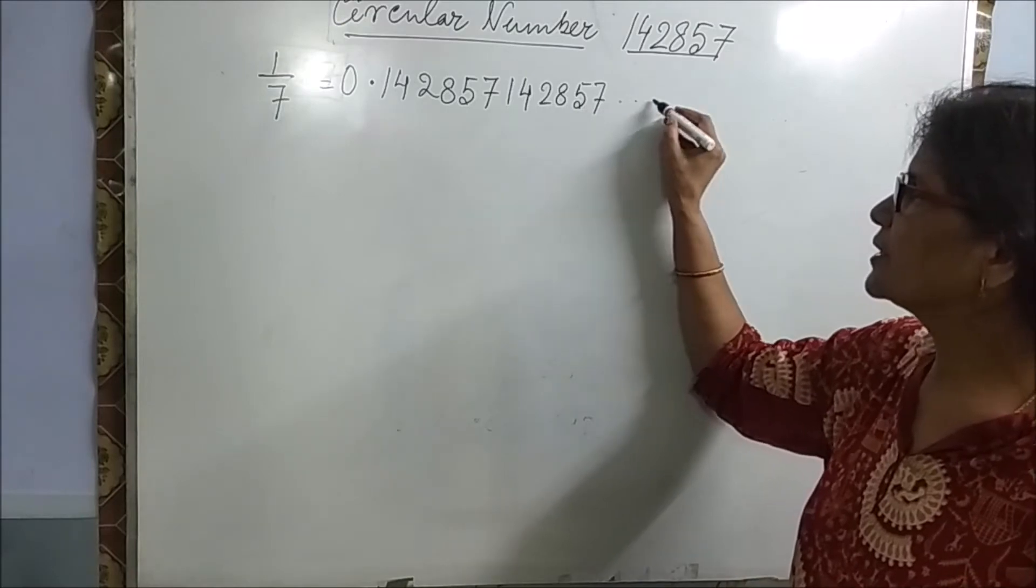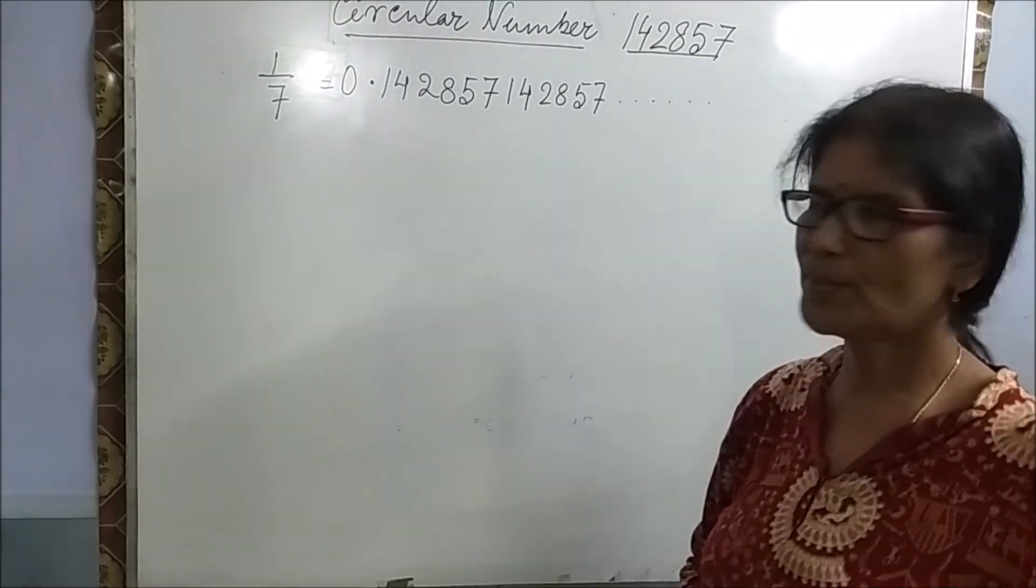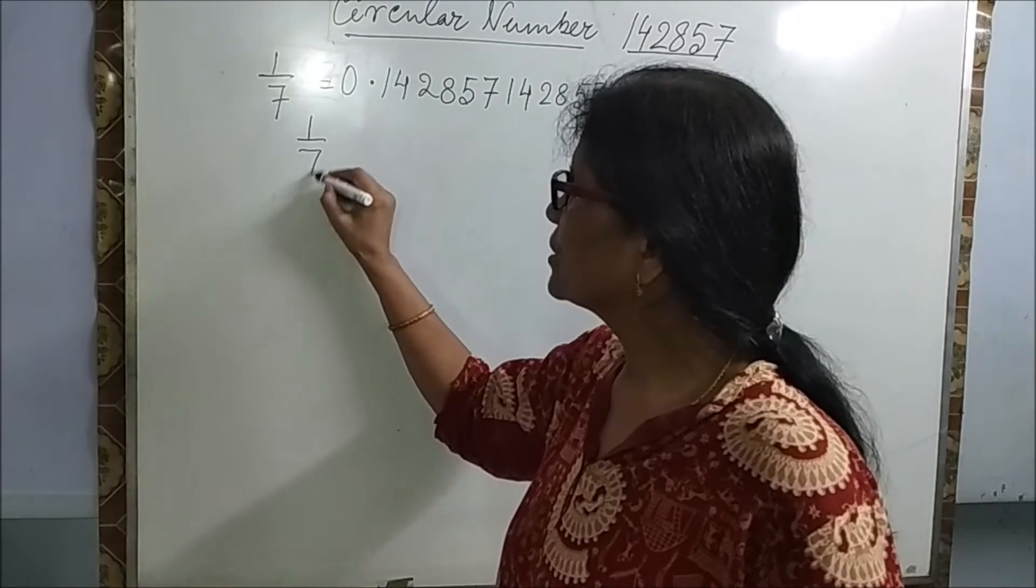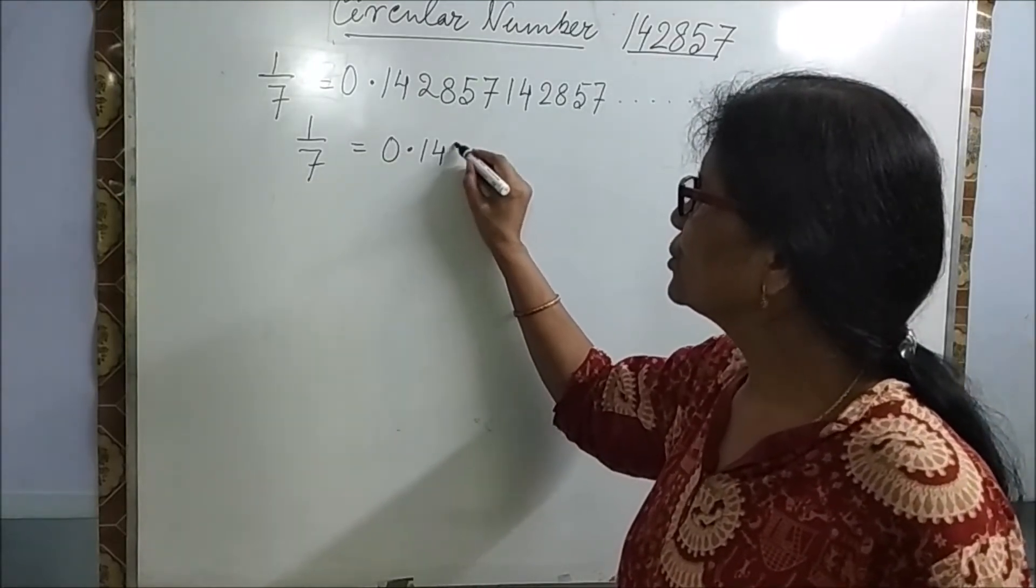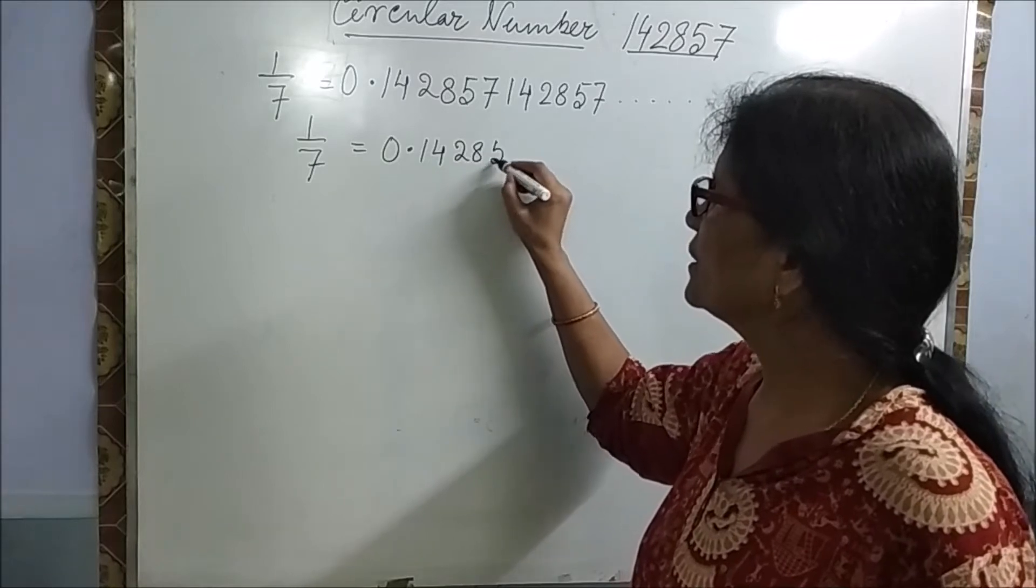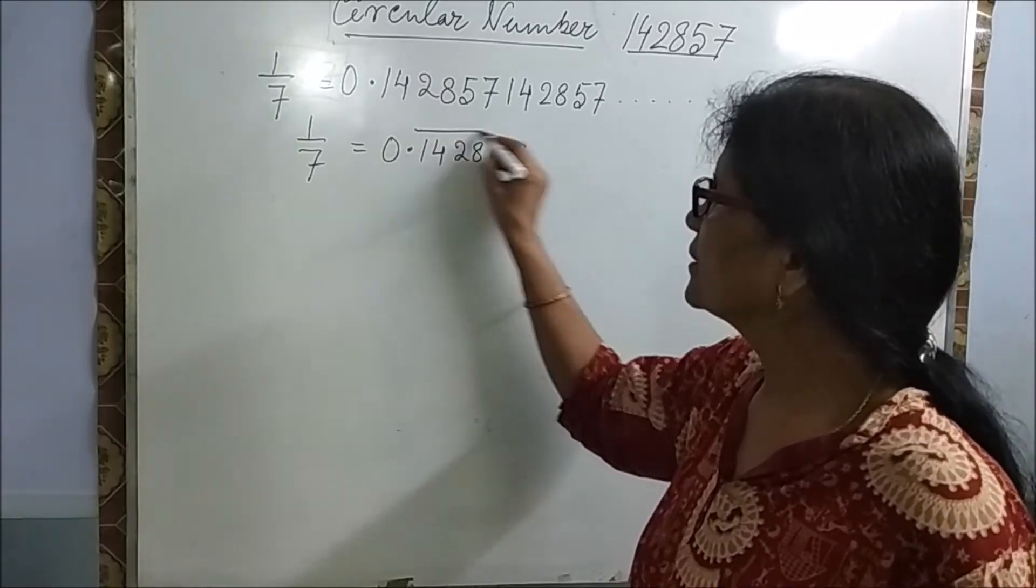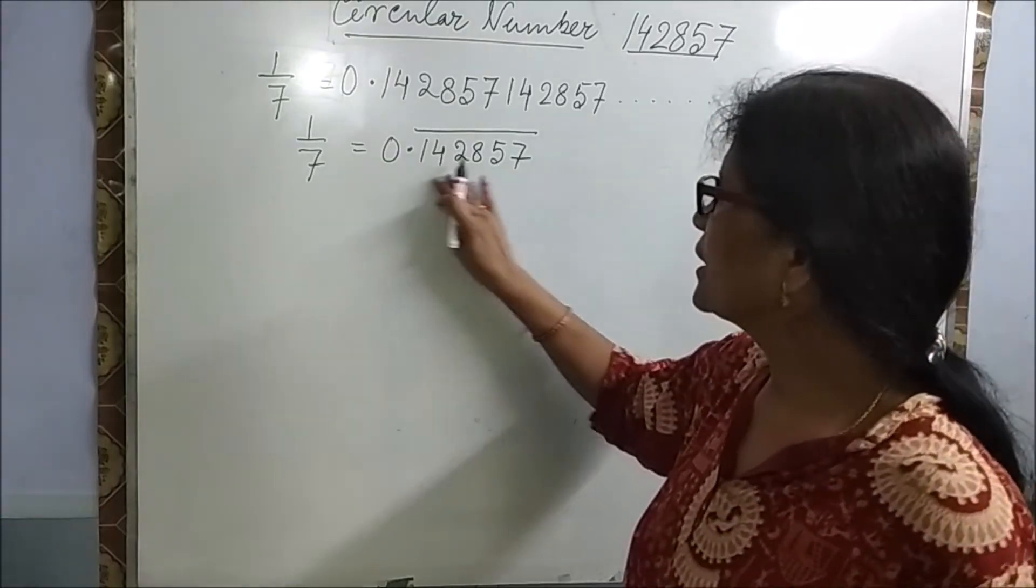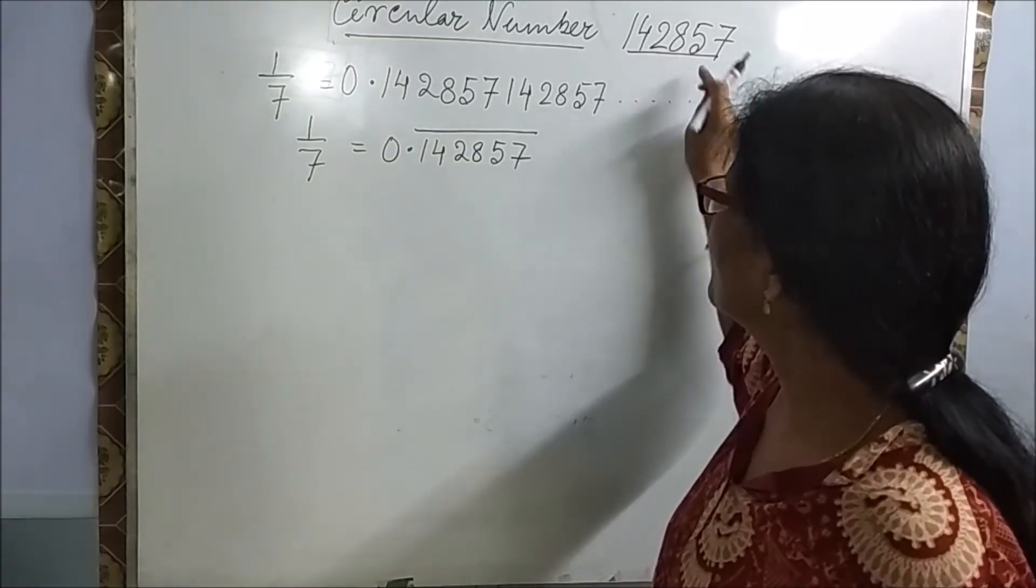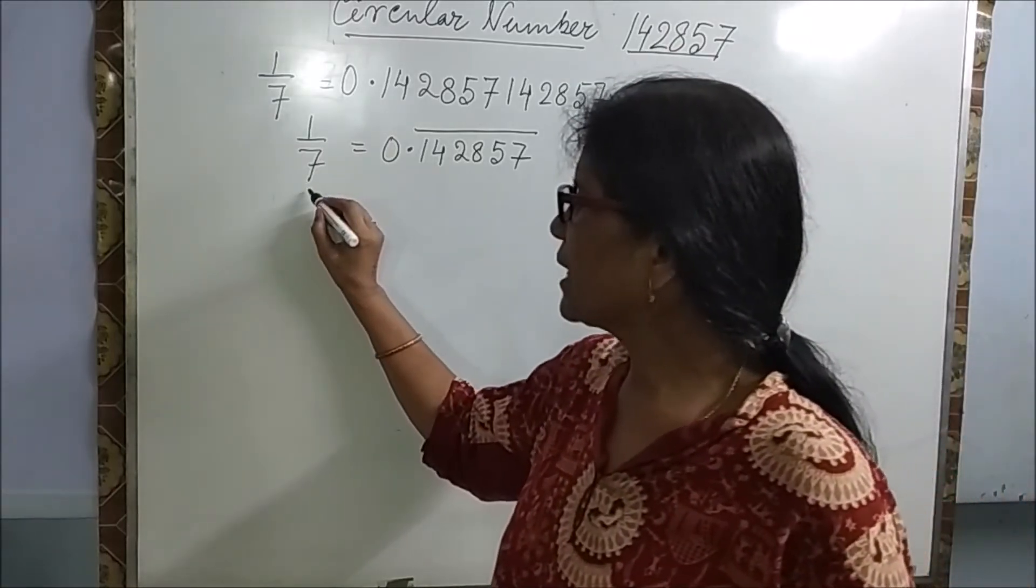Again 142857. In the NCERT book also this is given as example. So we write 1 by 7 is equal to 0.142857. On this we put an overall bar. That means it is repeated. So you are getting the same number here. 142857.